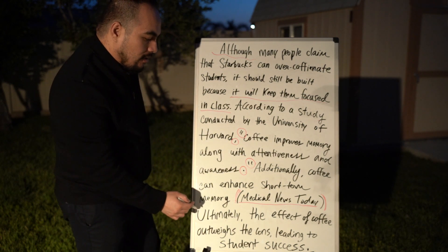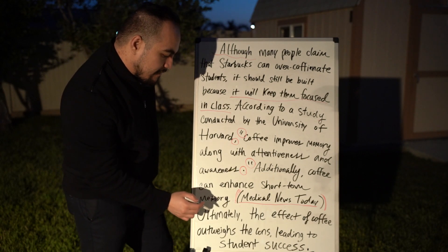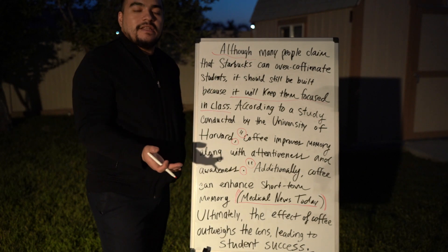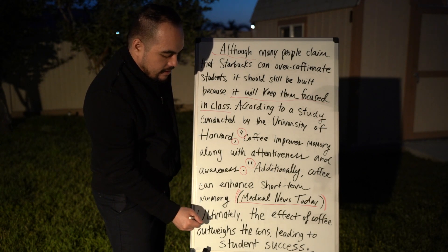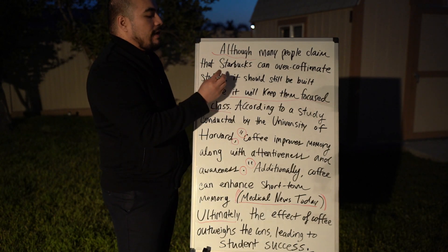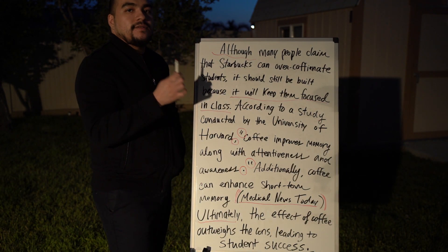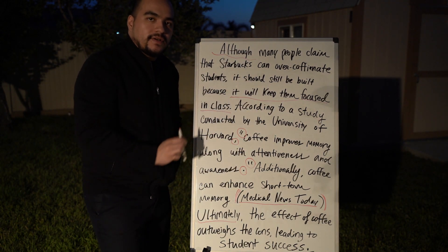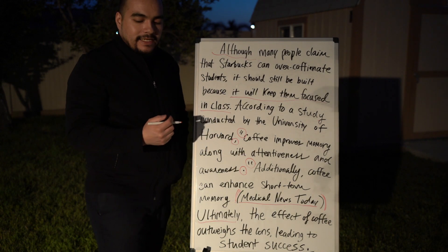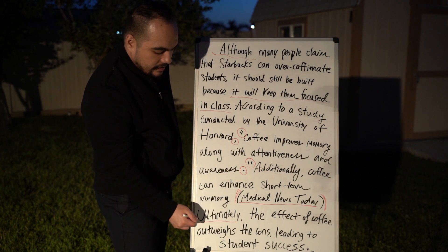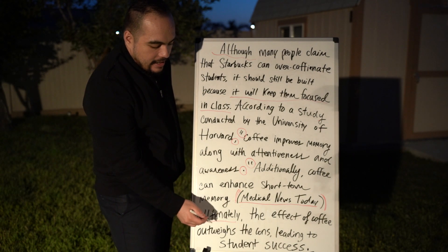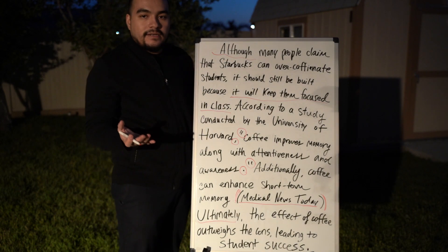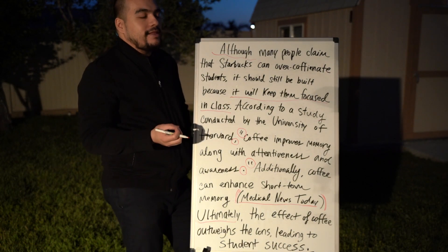Right here at the very end we say: ultimately, the effect of coffee outweighs the cons leading to student success. Finally, we have a relation to the thesis. All of this ultimately will relate back to your thesis statement's supporting detail — we want to make sure everything you include comes full circle. One of the biggest things to include is another transitional phrase at the very end. 'Ultimately' lets you know at the end of the day, in the end — it's ending on a really strong note.